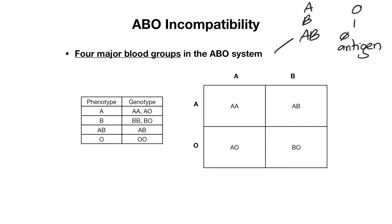Let's take an example. If mom and dad are AO and AB, the possible genotypes for offspring are AA, AB, AO, and BO. The associated phenotypes would be type A, AB, type A again, and type B.